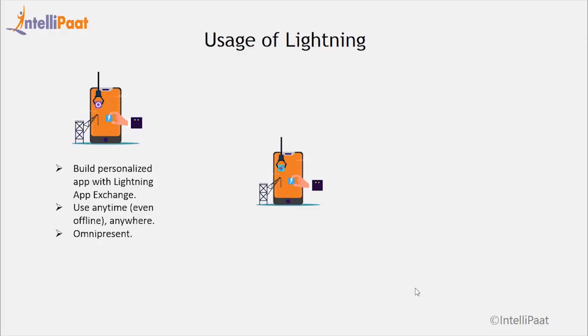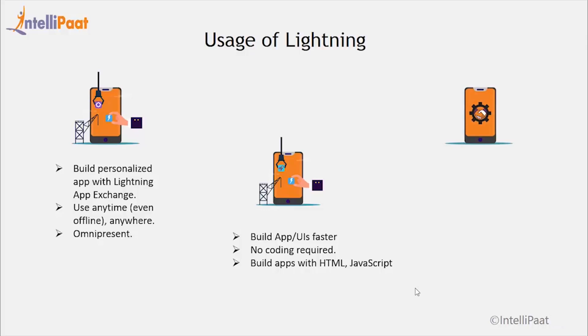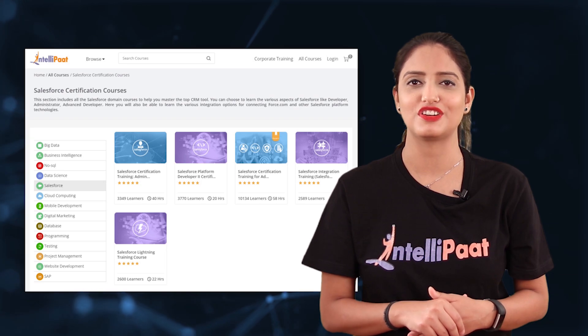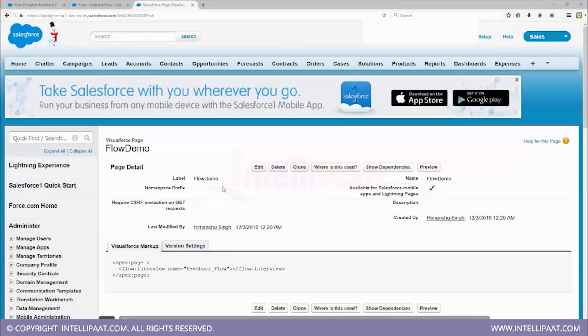What can we do using the Salesforce Lightning framework? Build apps faster — out-of-the-box components enable developers to develop apps faster. You don't need any coding; simply drag and drop components. Developers also have the option to build innovative apps and appealing UIs using web-enabled code like HTML, JavaScript, and CSS. Finally, you can customize the CRM — Salesforce Lightning enables its users to customize their CRM anytime so that they can use it effectively and successfully.